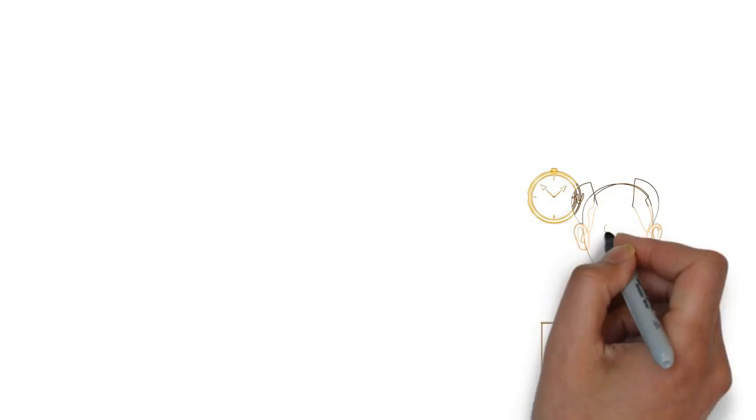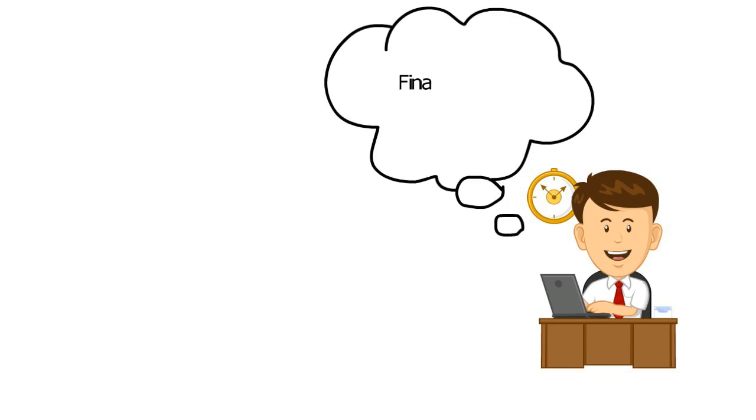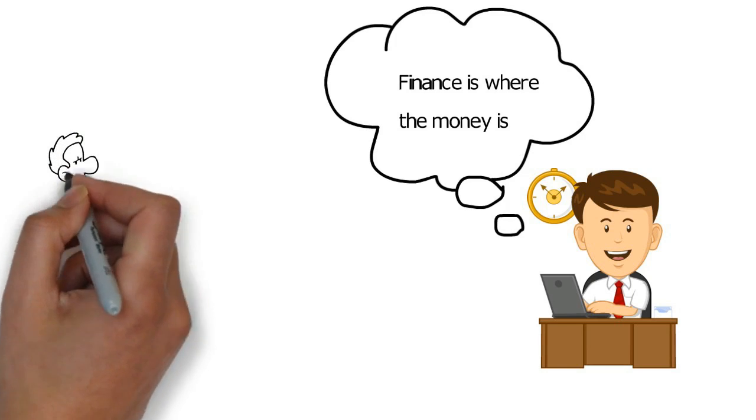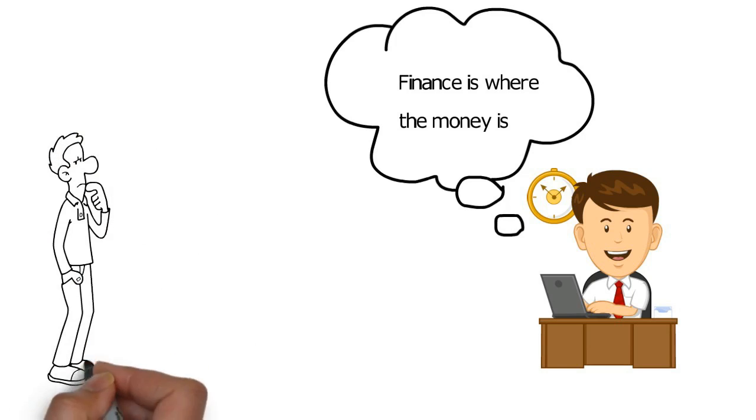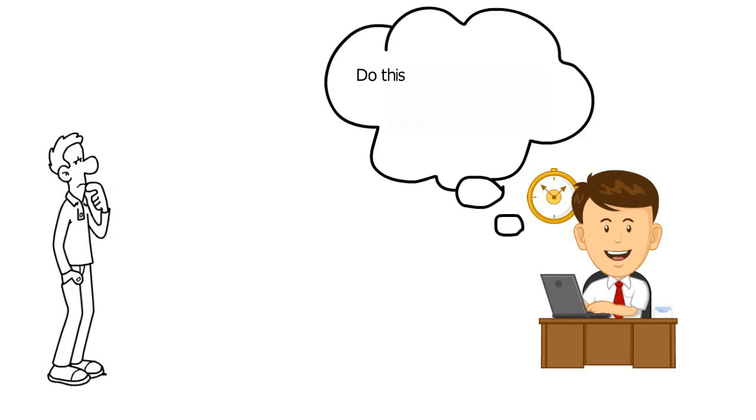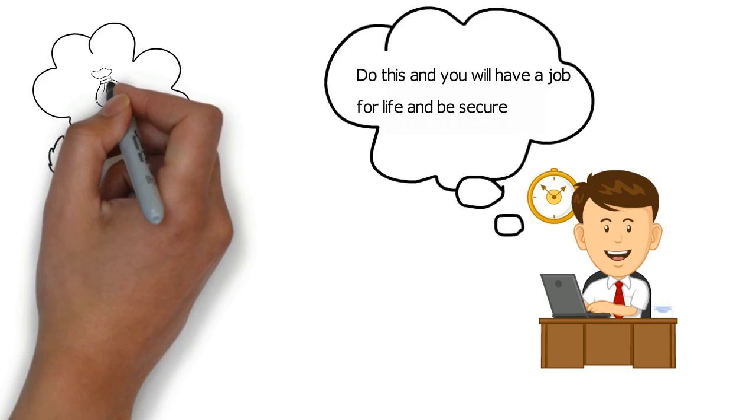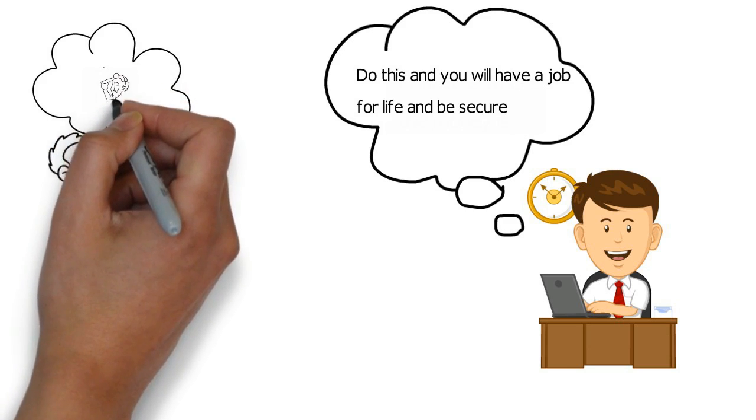So he went to his uncle Fred, who is an accountant. Finance is where the money is, Fred chuckled to himself. Sam couldn't quite see the humor, as this was serious. Fred followed up with, do this and you will have a job for life and be secure. Sam liked the idea of being secure, but finance sounded boring to him.